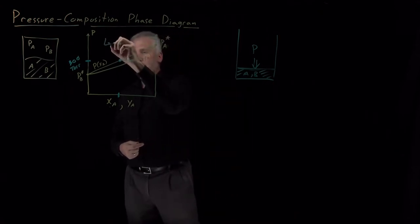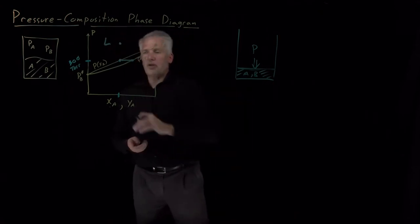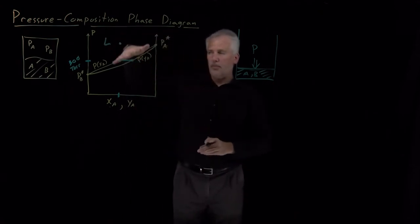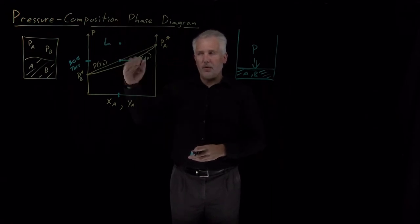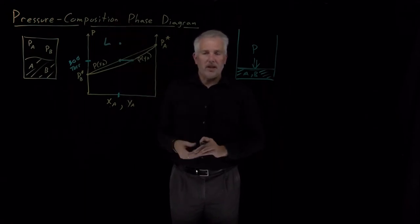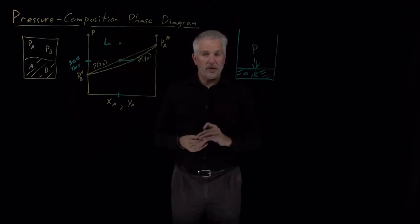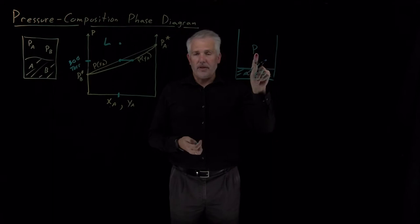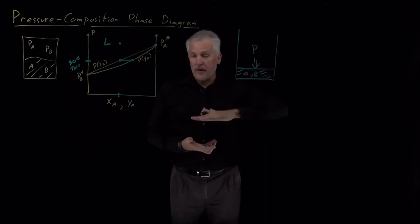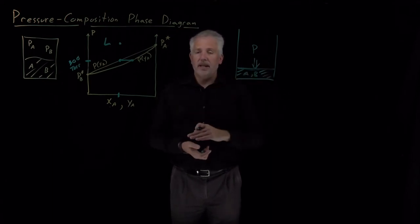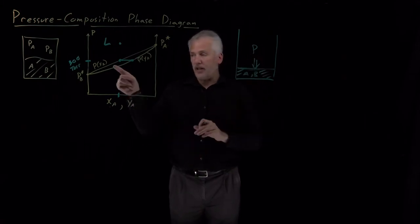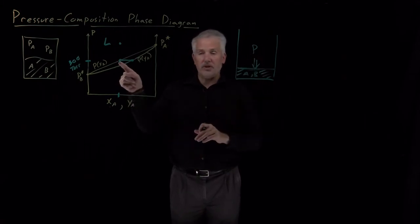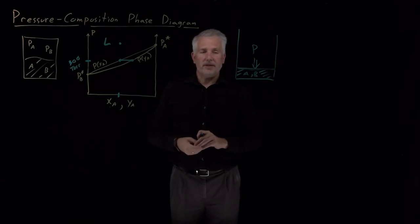The entire upper portion of the phase diagram is for the liquid phase — not liquid coexisting with gas — because just like for a single component system, if I exert a pressure greater than the vapor pressure, it will all condense. In this case, I've exerted a pressure greater than the combined Raoult's law pressures, so I'm in the liquid phase.